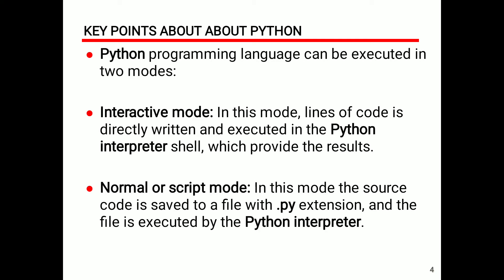In interactive mode, lines of code are directly written and executed in the Python interpreter shell, which provides the results. In normal or script mode, the source code is saved to a file with a .py extension and the file is executed by the Python interpreter.